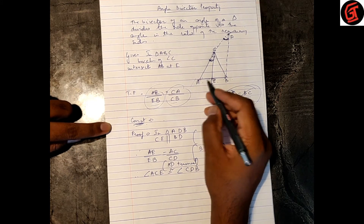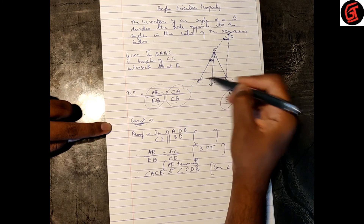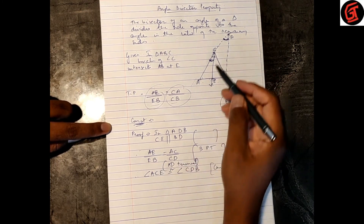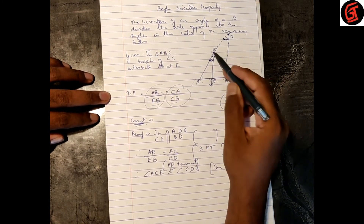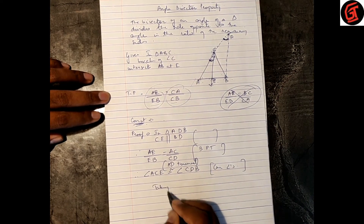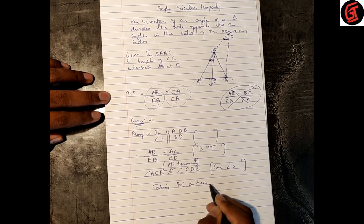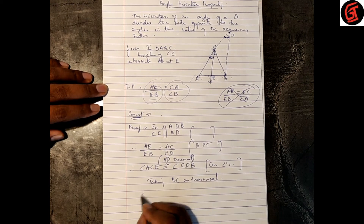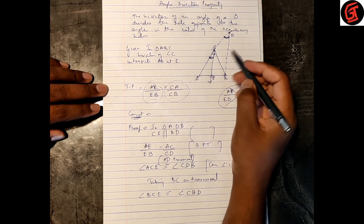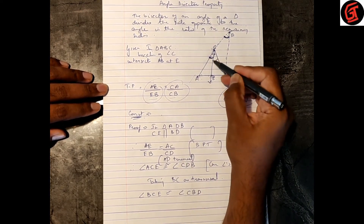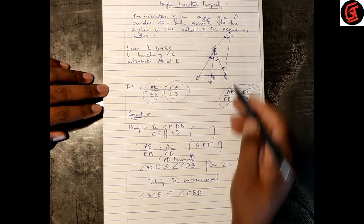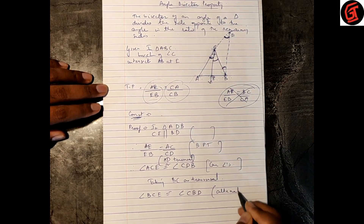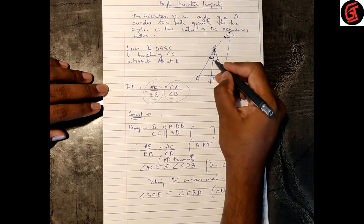Now taking BC as the transversal, we get Z-formation, so angle BCE is congruent to angle CBD by alternate angles.